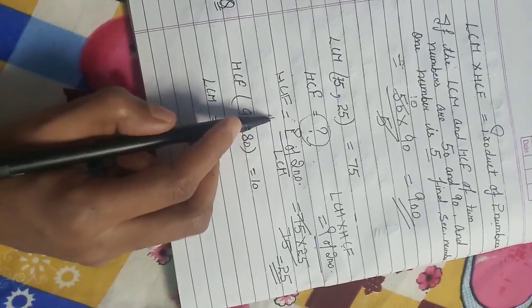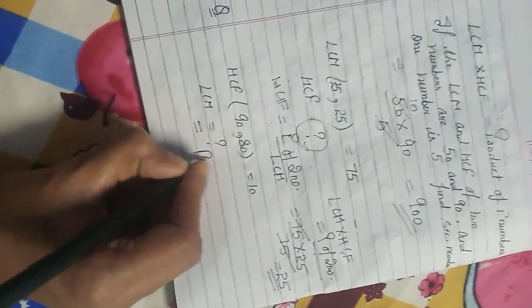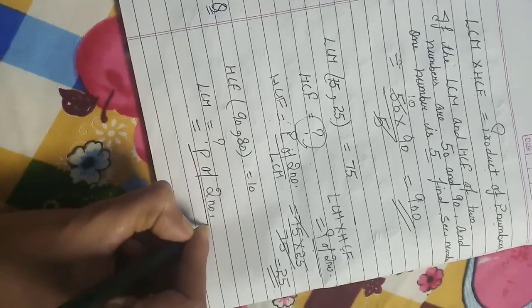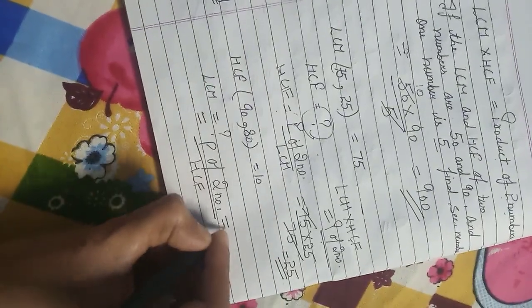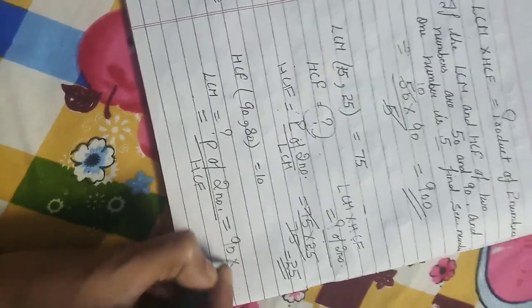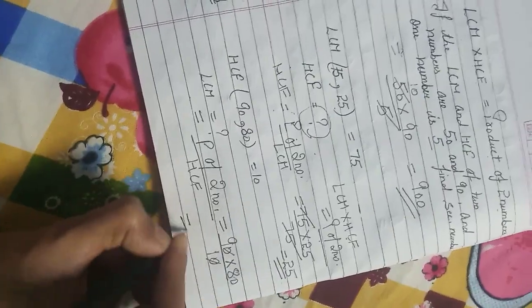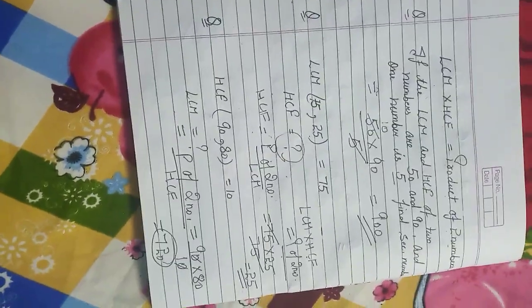Now we need to find LCM. The formula will be the same - product of two numbers divided by HCF. Here we have two numbers 90 and 80, and HCF is 10. So we need to find LCM.